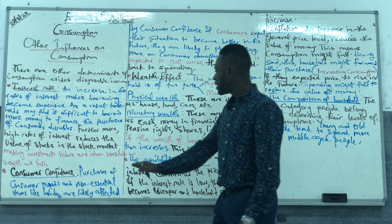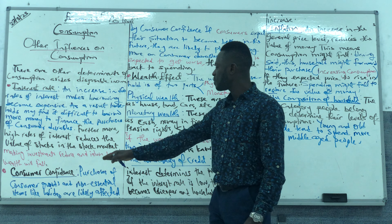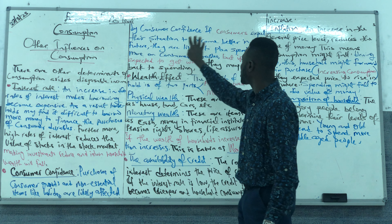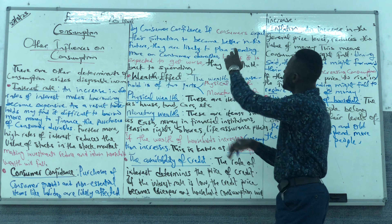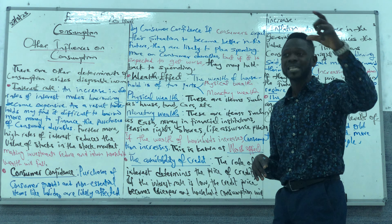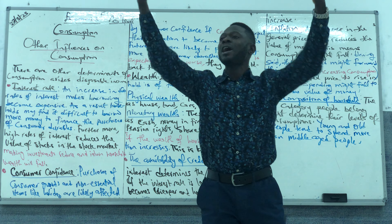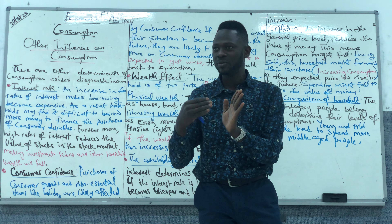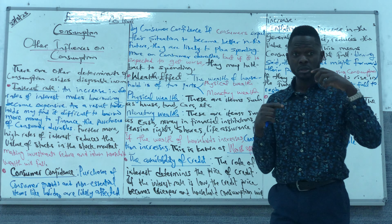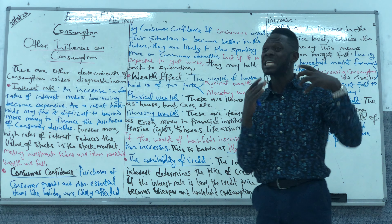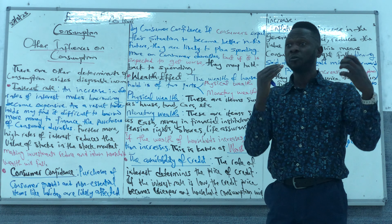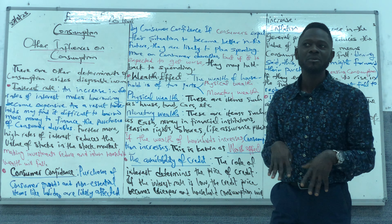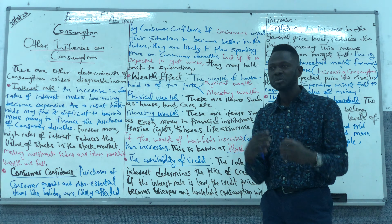Number two is consumer confidence. Purchases of consumer goods — non-essential items like holidays or other items — will be affected by consumer confidence. If consumers expect their situation to become better, if you think that in the future you will have more money, you can spend now and your consumption will increase. But if you are expecting your income to fall, or maybe you think you will lose your job in the future, you might not want to spend now, so your consumption will fall.